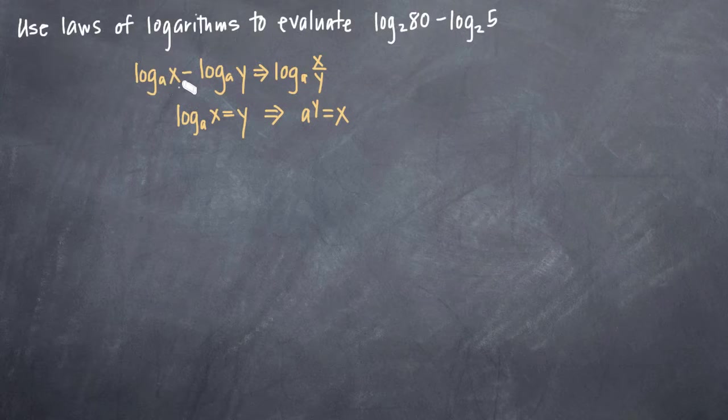One is log base a of x minus log base a of y can be converted into log base a of x divided by y. The other one is log base a of x equal to y can be converted into a to the y equals x.